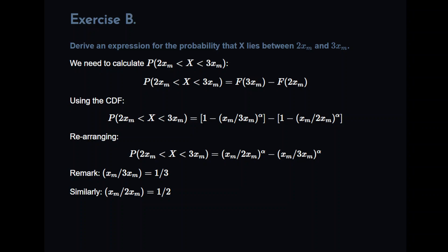Exercise B. Derive an expression for the probability that X lies between 2XM and 3XM. What we have to do there is calculate this interval probability, the probability of X being between 2XM and 3XM. And to do that what we will do is use the cumulative distribution function of F of 3XM minus F of 2XM. So using the expression that we have before, F of 3XM is 1 minus XM divided by 3XM to the power of alpha. And what we are going to do is subtract F of 2XM, and that is 1 minus XM divided by 2XM to the power of alpha.